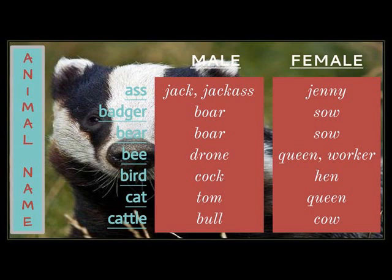Ass: the male version would be jack or jackass, the female would be jenny. Badger: the male would be a boar, the female a sow. Bear: the male a boar, the female a sow.